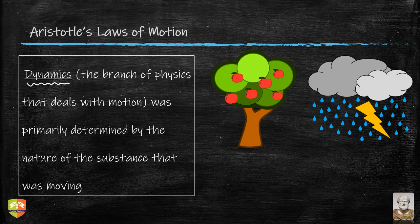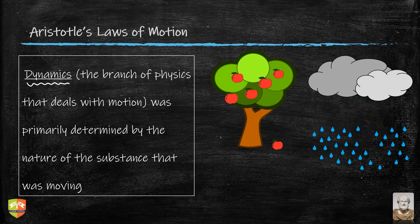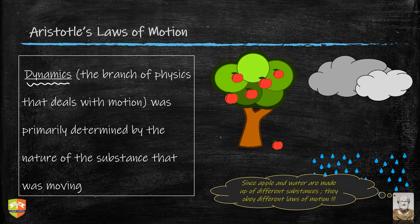Here you can see an apple tree and raindrops about to fall from a cloud. The apple is falling from the tree and the raindrops are falling from the cloud. What Aristotle is suggesting is that since an apple and water are made up of different substances, they will obey different laws of motion. Today we know this is not true, but back in the 4th century BC there were not enough experimental tools or research methodology to verify it.